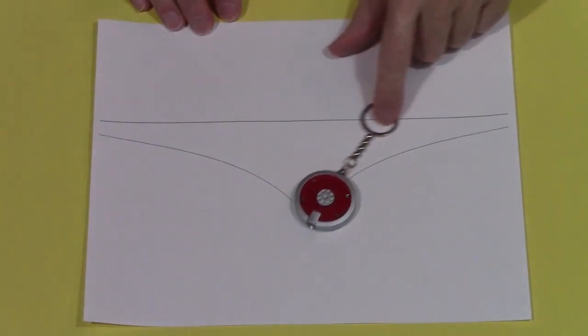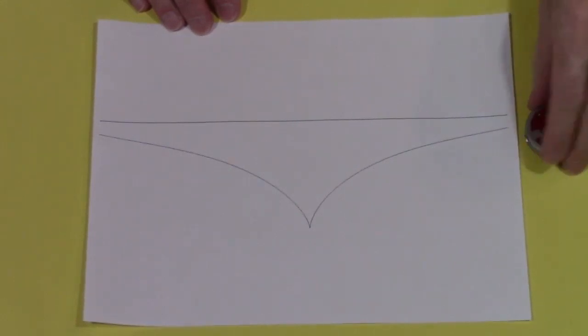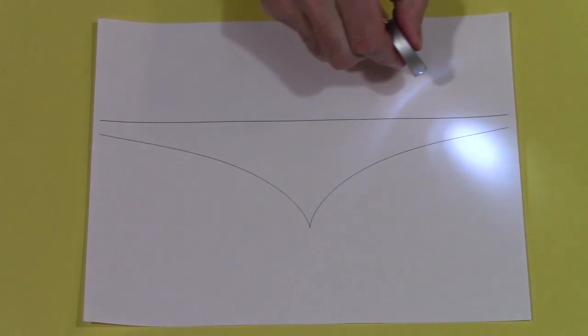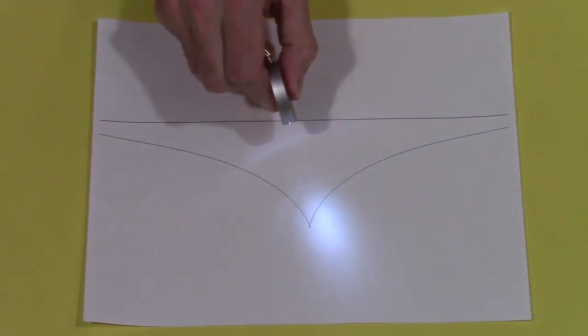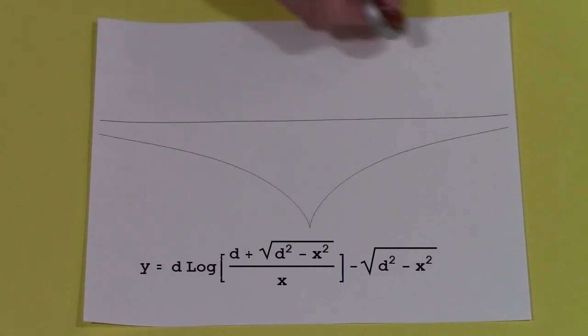the mass follows a curved path, getting closer and closer to the line, but never reaching it. This curved line is called a tractrix. The track part comes from the Latin word for pull, as in tractor. Newton first derived its equation in 1676.